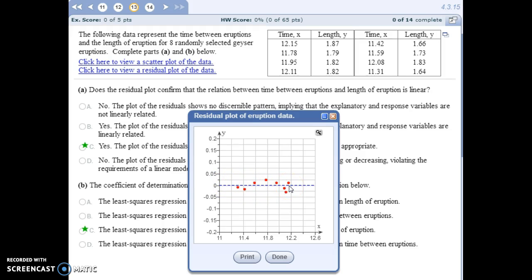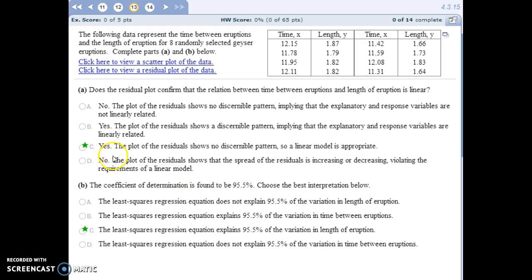And the third thing you want to check for is a pattern to see if there's a distinct U-shape or S-shape or V-shape, some kind of pattern in the residual, and it doesn't appear that we have any pattern at all. They all seem to be hovering pretty close to zero across the board. So, yes, the plot of the residuals shows no discernible pattern. A linear model is appropriate.